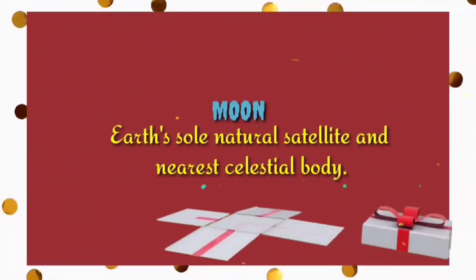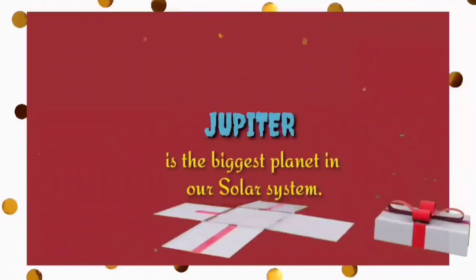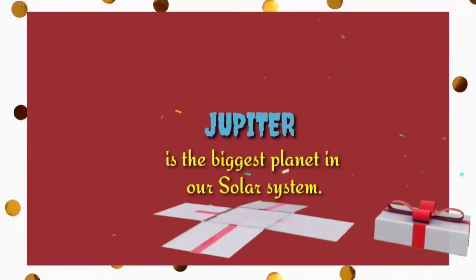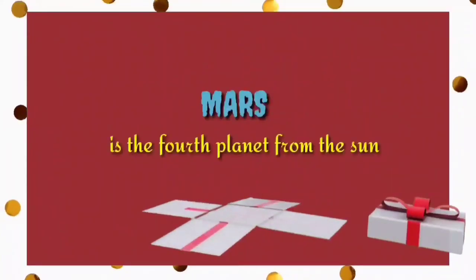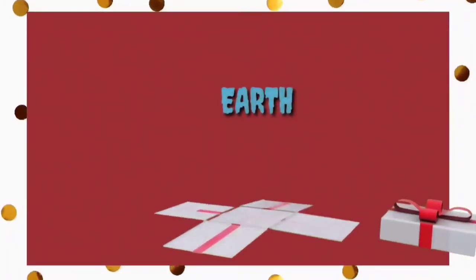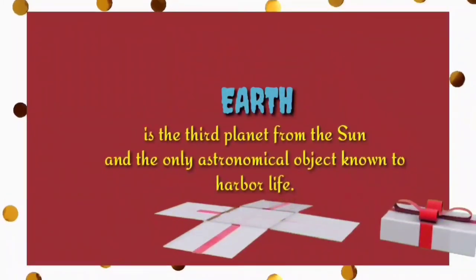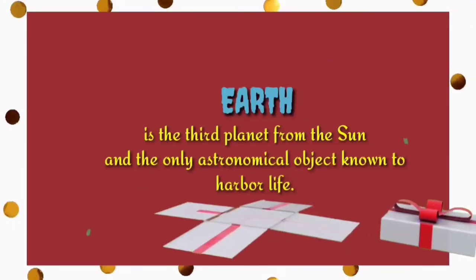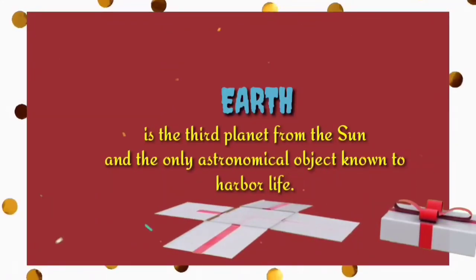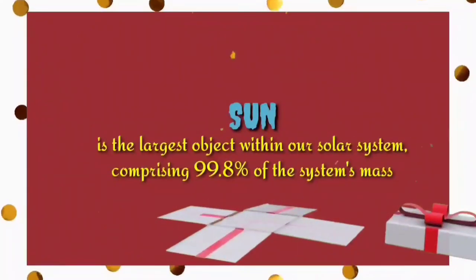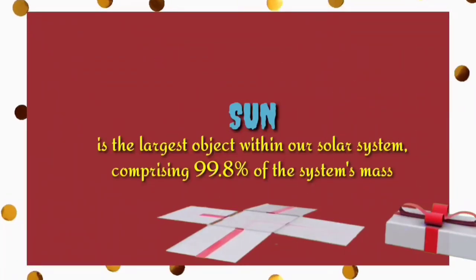The Moon is Earth's natural satellite and a near celestial body. Jupiter is the biggest planet in our solar system. Mars is the fourth planet from the Sun. Earth is the third planet from the Sun and the only astronomical object known to harbor life. The Sun is the largest object within our solar system, comprising 99.8 percent of the system's mass.